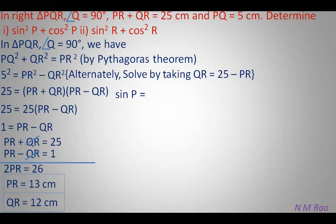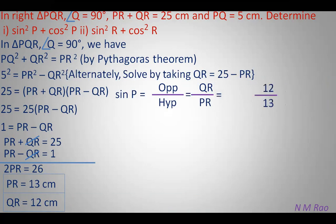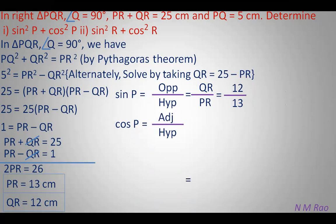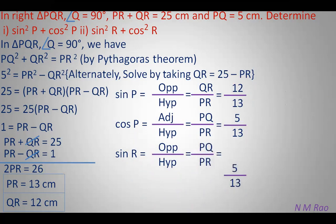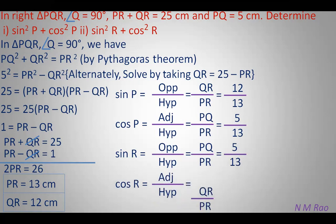Now let us determine the trigonometric ratios. Sin P equals opposite side to P upon hypotenuse, which is QR upon PR equals 12/13. Cos P equals adjacent side to P upon hypotenuse, which is PQ upon PR equals 5/13. Sin R equals opposite side to R upon hypotenuse, which is PQ upon PR equals 5/13. Cos R equals adjacent side to R upon hypotenuse, which is QR upon PR equals 12/13.